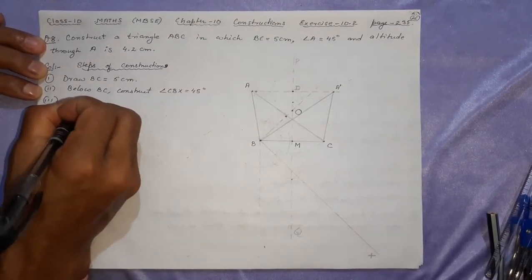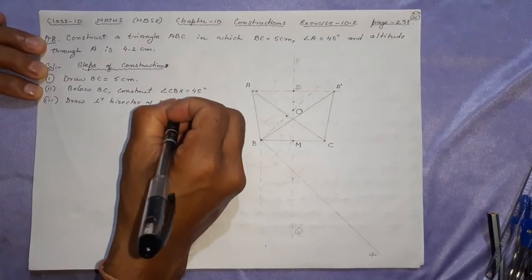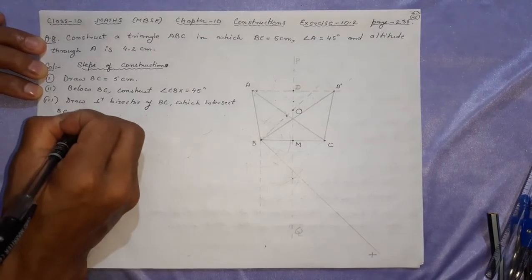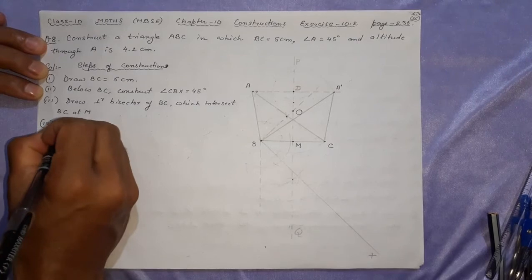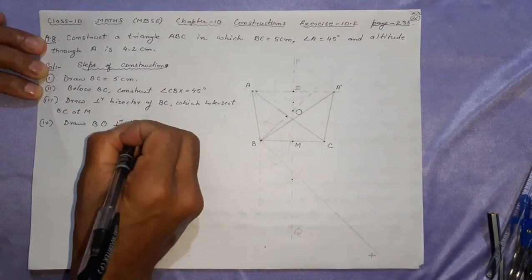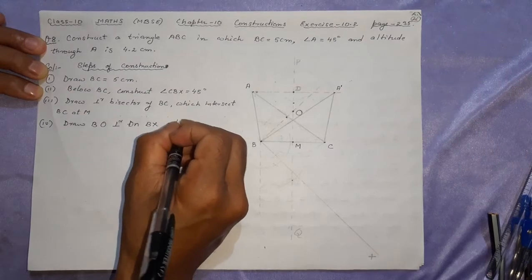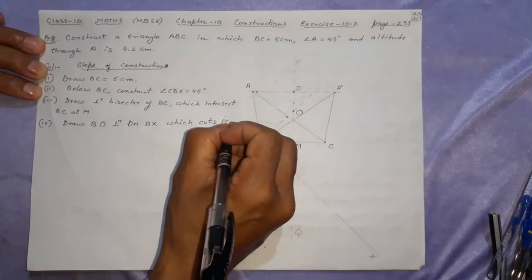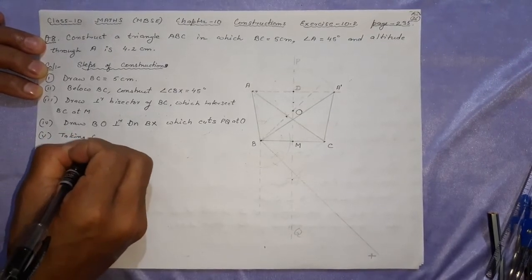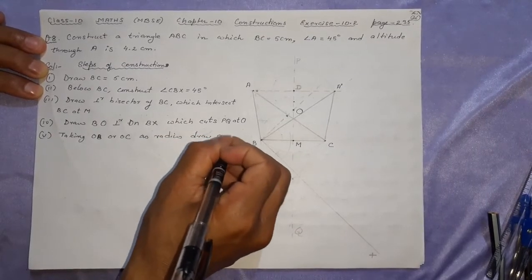Third step: Draw perpendicular bisector of B C, which intersects B C at M. Bisector is P Q. Fourth: Draw B O perpendicular on B X, which cuts P Q at O. Next is taking O A or O B or O C as radius, draw a circle. Done.